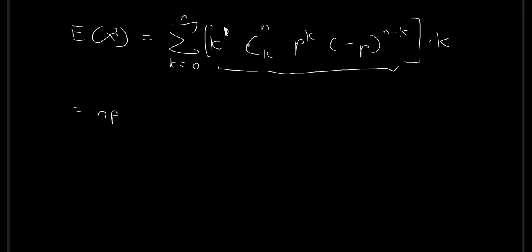So using the same method in the last video, what we did was we pulled out np and then we had this expression over here. So for this entire term, we had n minus 1 choose k, p to the power of k, 1 minus p to the power of n minus 1 minus k.